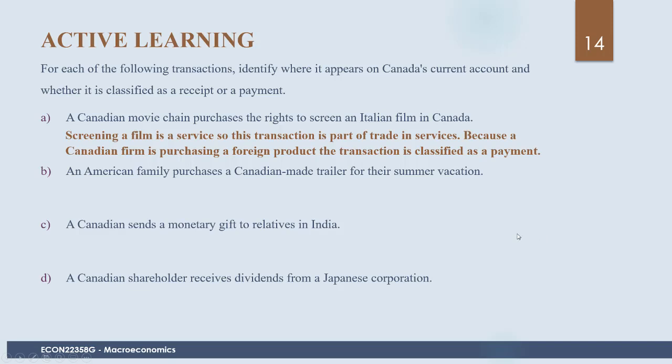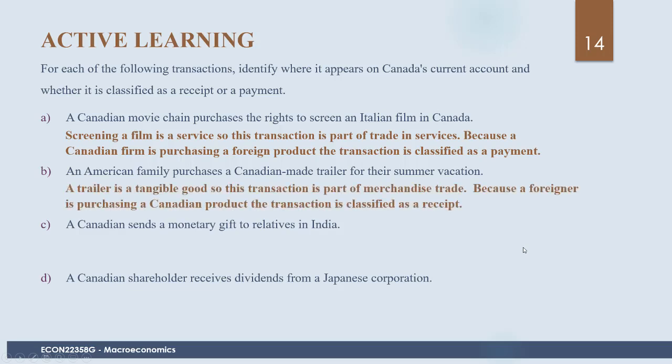In part B, an American family purchases a Canadian-made trailer for their summer vacation. A trailer is a tangible good, so this transaction is part of merchandise trade. We have an export here — a foreigner purchasing a Canadian product — so the transaction is classified as a receipt.